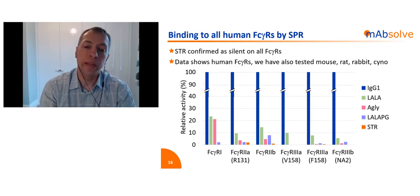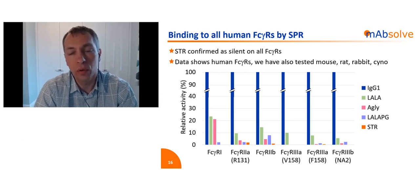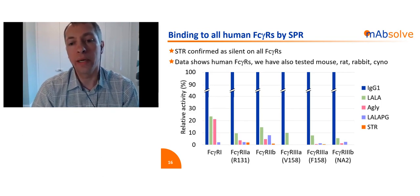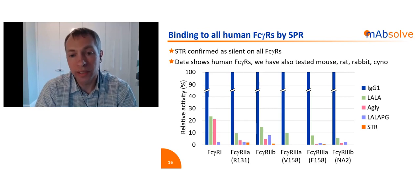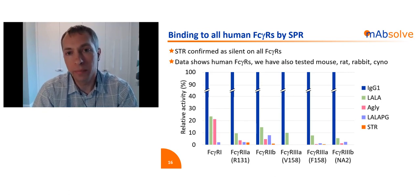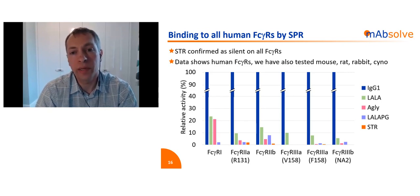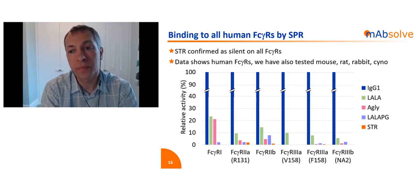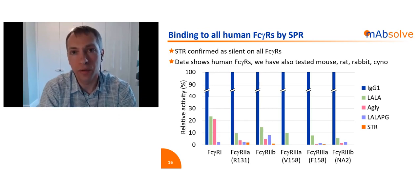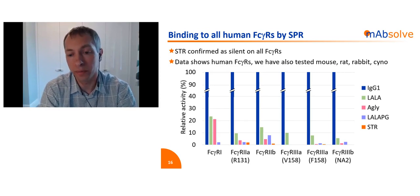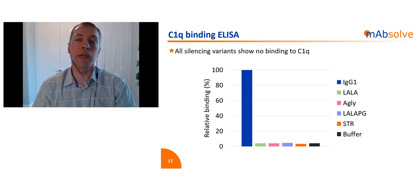We needed to demonstrate that we'd not just abolished binding to FC gamma R1, but also all other FC receptors. Comparing STR with LaLa, AirGly, and LaLaPG, the other variants show some degree of residual binding to all FC receptors. STR is either zero, or in the case of FC gamma R2a, no higher than background noise. We've also shown very similar results for binding to FC receptors from other species. In fact, you can transfer the STR mutations from a human antibody onto a mouse or non-human primate antibody and again get total silencing, allowing you to utilize STR variants in mouse or non-human primate models.